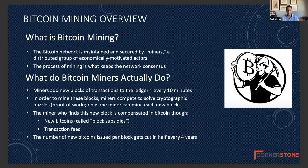Every four years approximately, the amount of Bitcoin awarded every 10 minutes gets cut in half. So in 2024, the amount of new Bitcoin is going to go down from 6.25 issued every 10 minutes to 3.125.